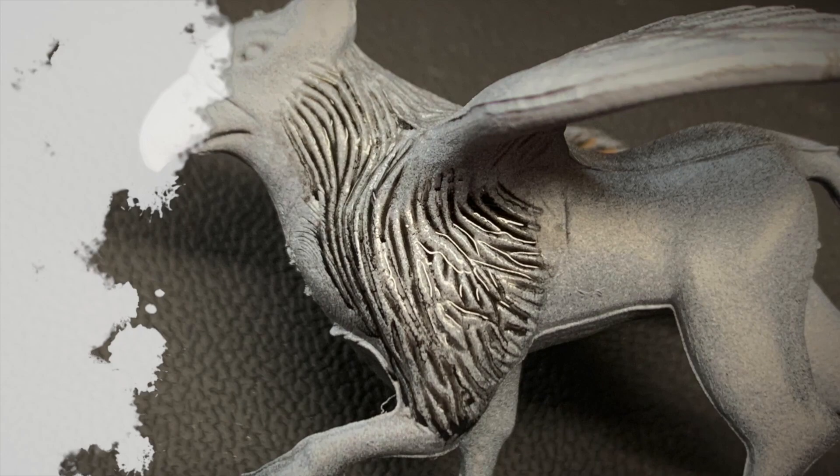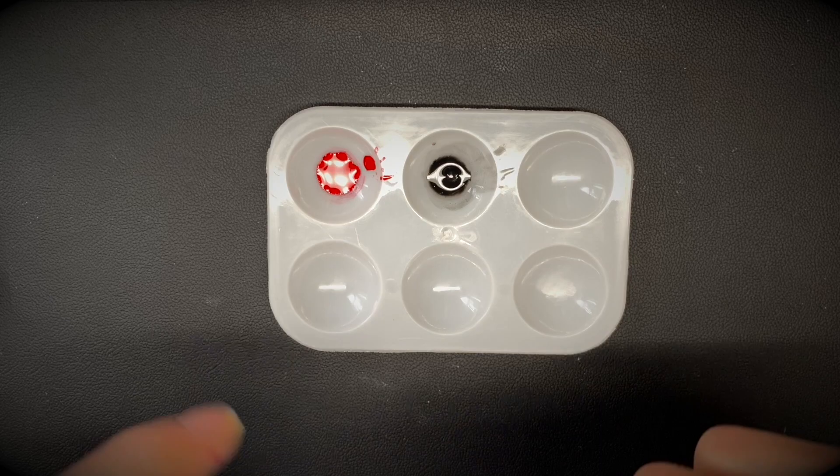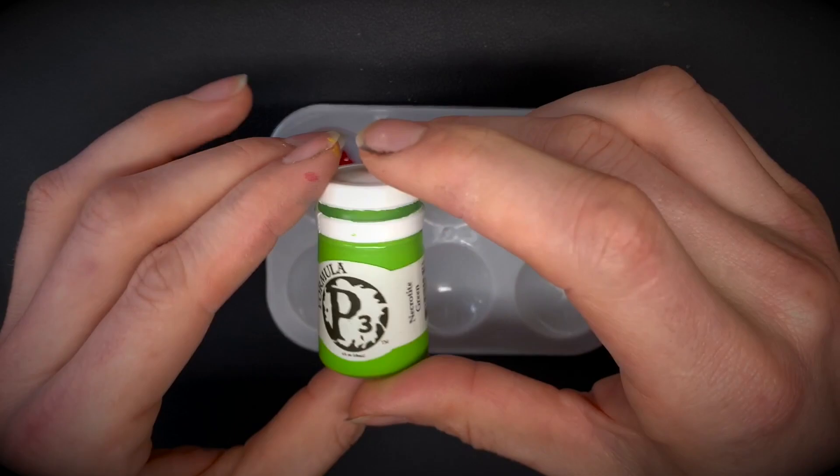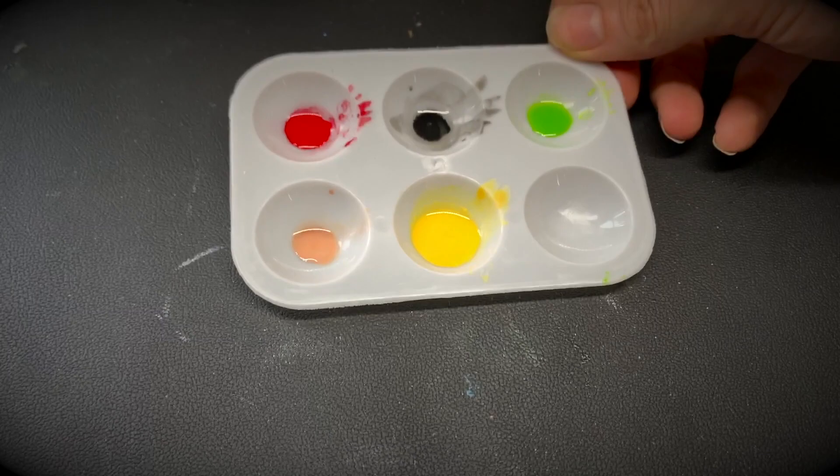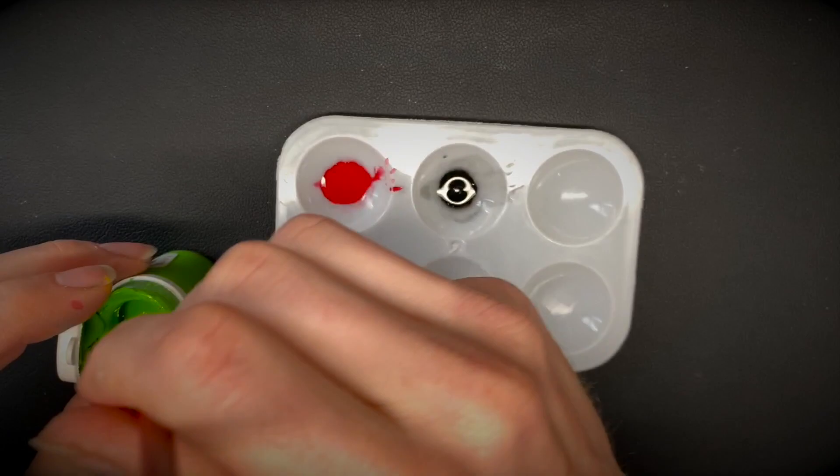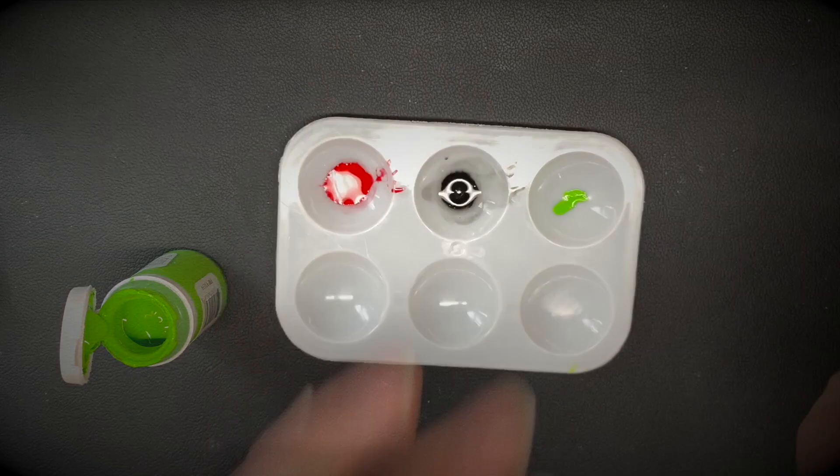Now on to Privateer Press or P3. This is Necrotite Green, one of my favorite greens. This paint is fairly thinner than most paints - almost knocked it all over. And since it's a bit thinner, we're gonna use less water, but I went ahead and put 10 drops anyways just to see.